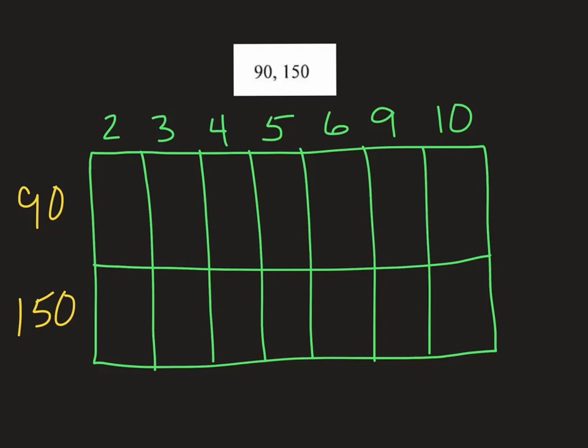When we're trying to find the common factors of two numbers, one thing we can do is set up a little table like this, and we can go through and look at the rules of each one of these and put a check mark in the box if they work.